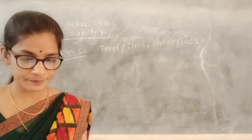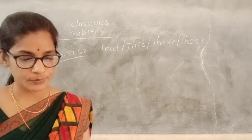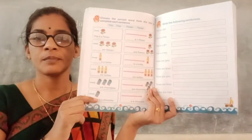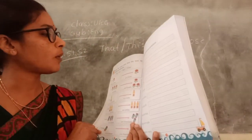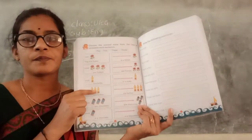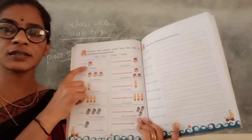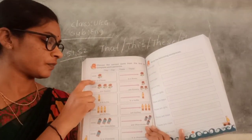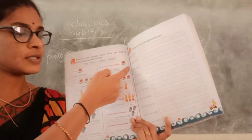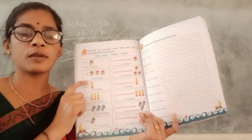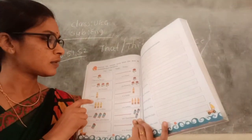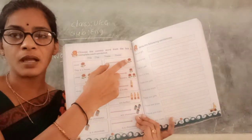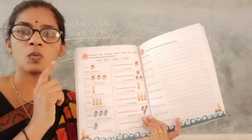Next, open the textbook page 52. Look at this — same work. Choose the correct word from the box to complete each sentence. This is near and one thing, so you should use 'this.' And when the flower is far to us and only one, that is a flower. This is near to us, that is far to us, only one.